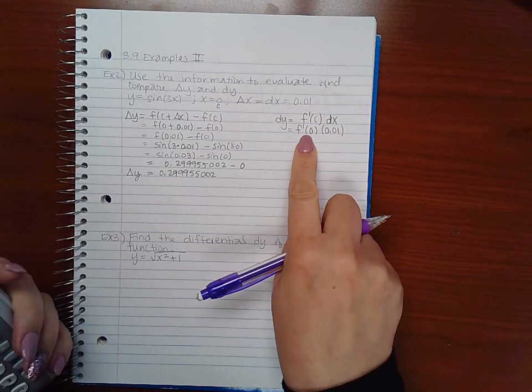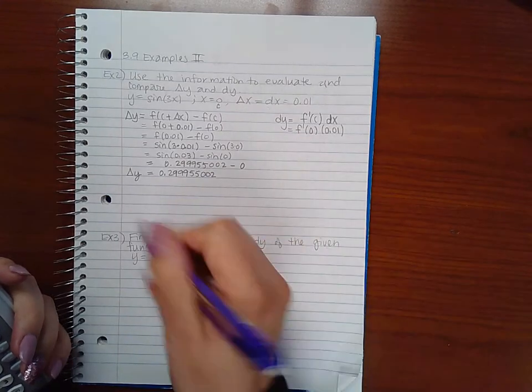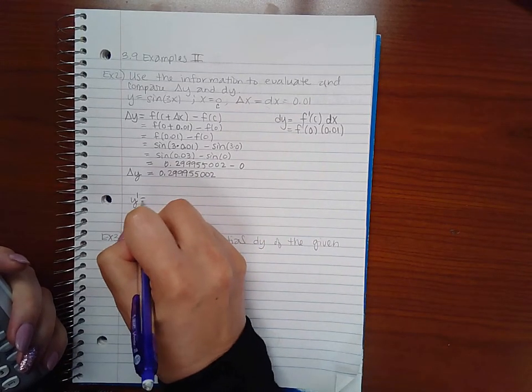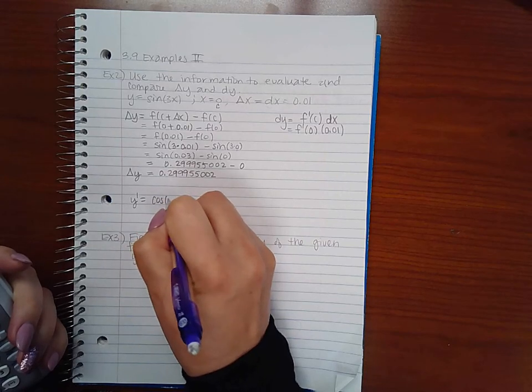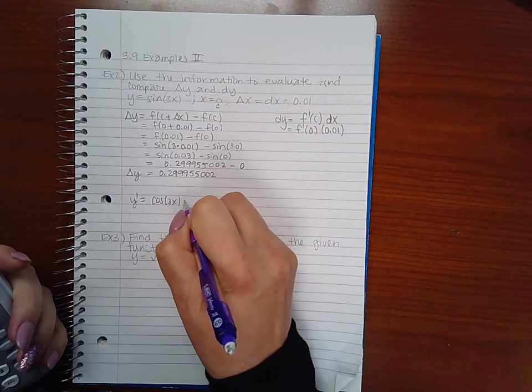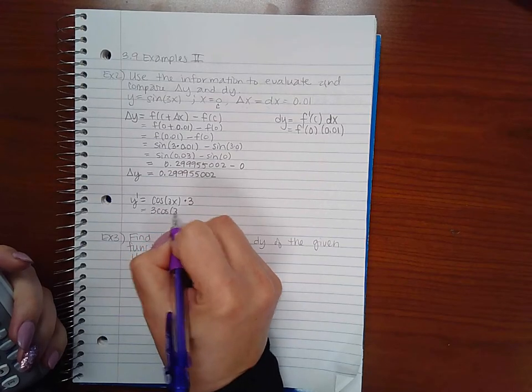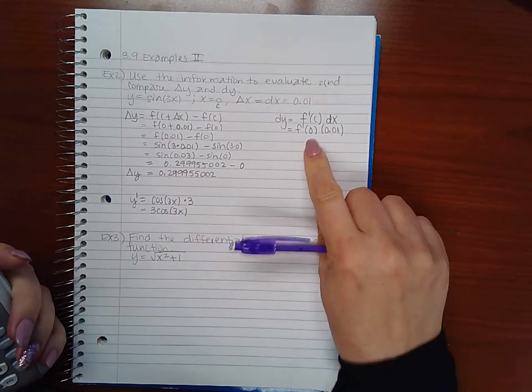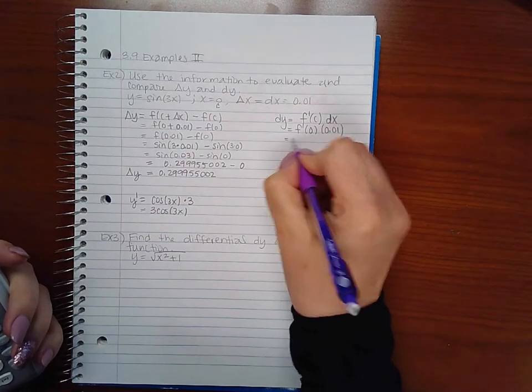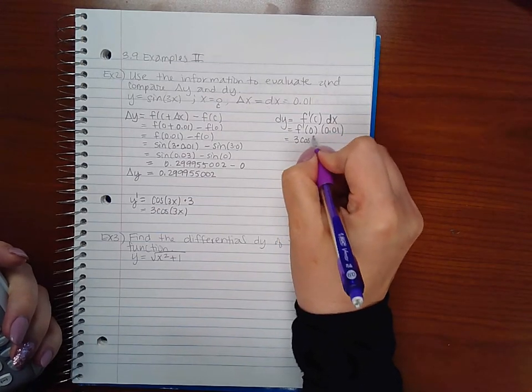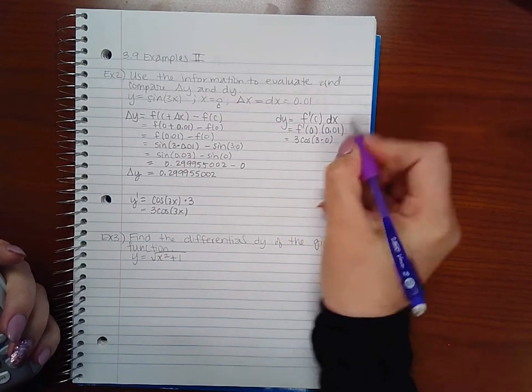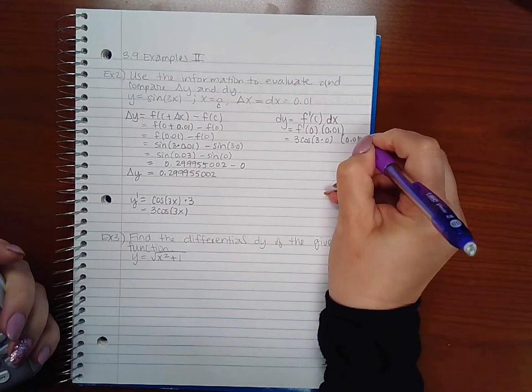Well I don't know what the derivative is so I need to figure that out first. So y prime is actually cosine of 3x times the chain rule times 3, or 3 cosine of 3x. So I'm plugging 0 into the derivative which means 3 cosine of 3 times 0 times 0.01.